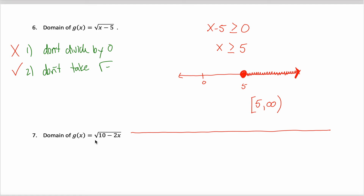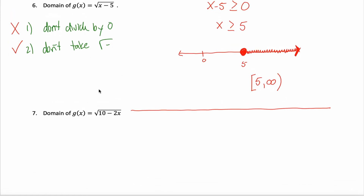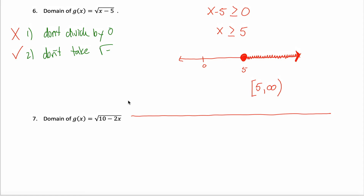Let's try another example: the domain of the square root of 10 minus 2x. This looks pretty similar — we don't have to worry about dividing by zero since there are no fractions, but we do have to make sure we don't take the square root of a negative number. So I take what's underneath the radical — 10 minus 2x — and set that greater than or equal to zero. Then I solve this inequality, but be careful: solving inequalities is hard.